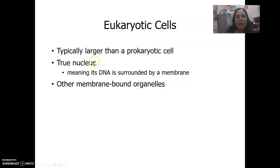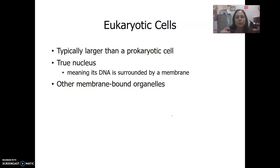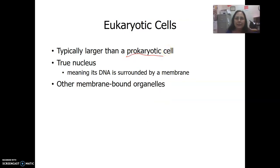So there are two types of cells. In the last lecture we learned about the first type, which are prokaryotic cells. Prokaryotic cells have no nucleus, they're always unicellular, they have no membrane-bound organelles, and they consist of bacteria and archaea.